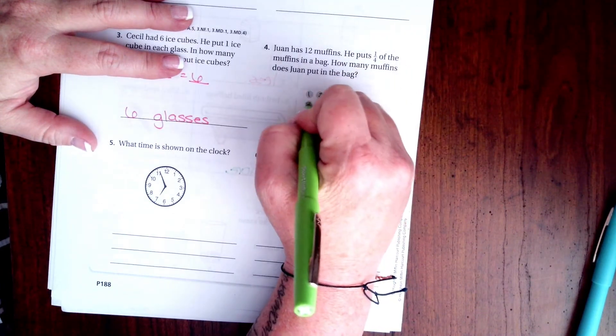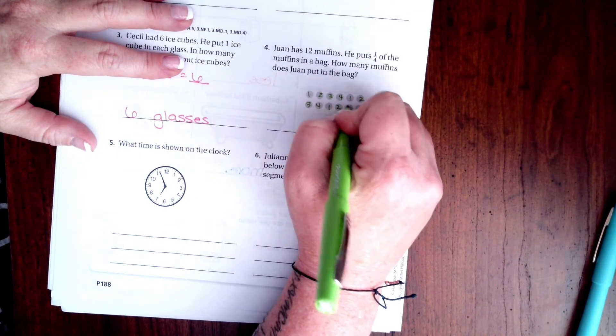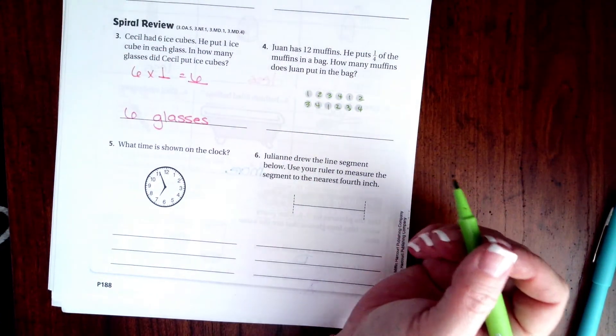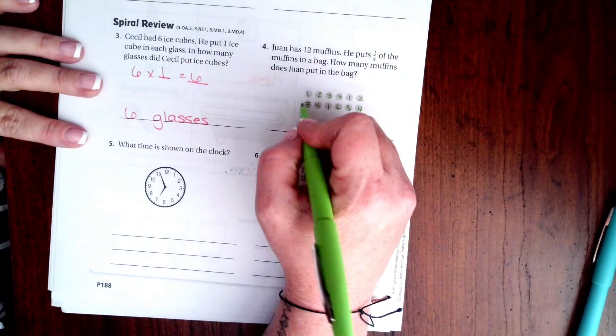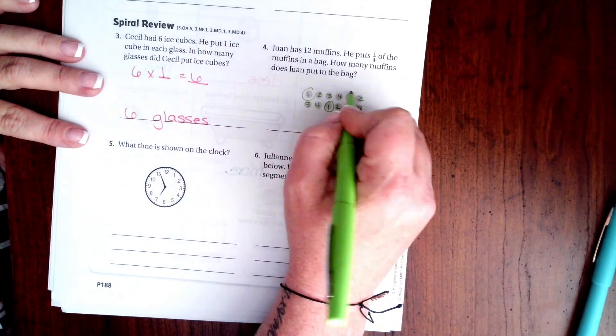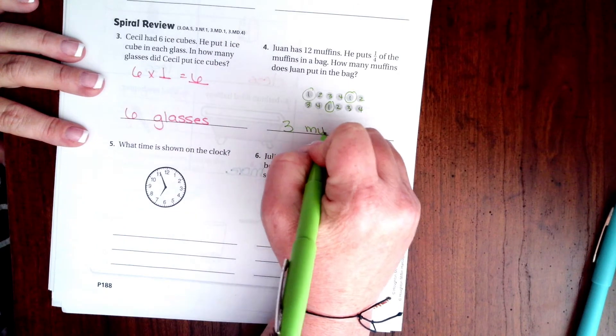One, two, three, four. One, two, three, four. And then I can just see how many ones I have. So here's a one, here's a one, and here's a one. Well that's three, three muffins.